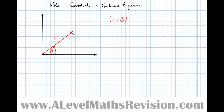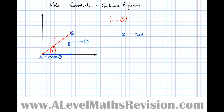And we want to find the Cartesian coordinates of a general point. Much like resolving forces in mechanics, we know that the x-distance to the point is R cos theta, and the y-distance is R sin theta. So the x-coordinate is equal to R cos theta, and the y-coordinate is equal to R sin theta. So there are two useful facts to remember: x equals R cos theta, y equals R sin theta.